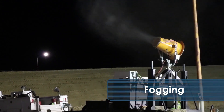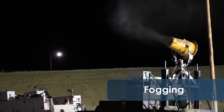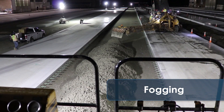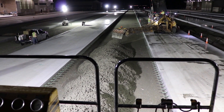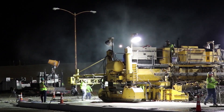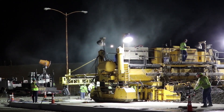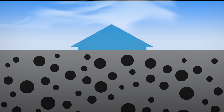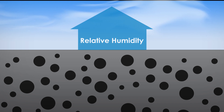Concrete pavements are fogged using specialized fog nozzles to create a fog blanket on the surface of the fresh concrete. Fogging minimizes evaporation and reduces plastic shrinkage cracking by raising the relative humidity immediately above the slab surface without spraying excessive water on the slab surface.